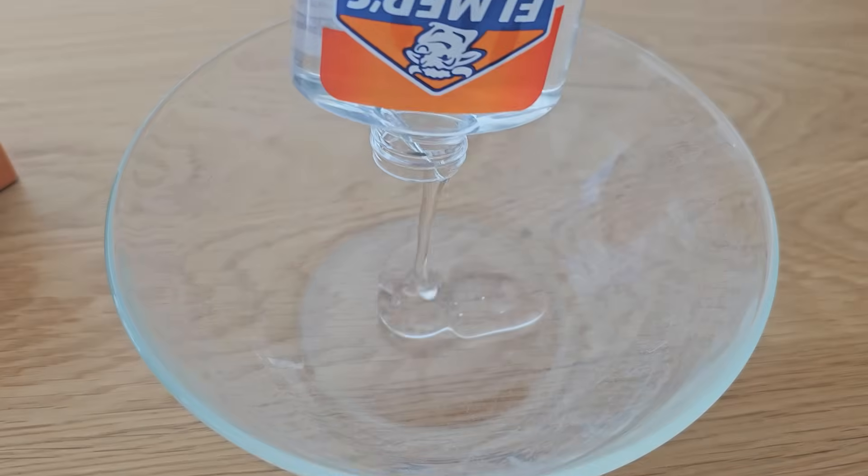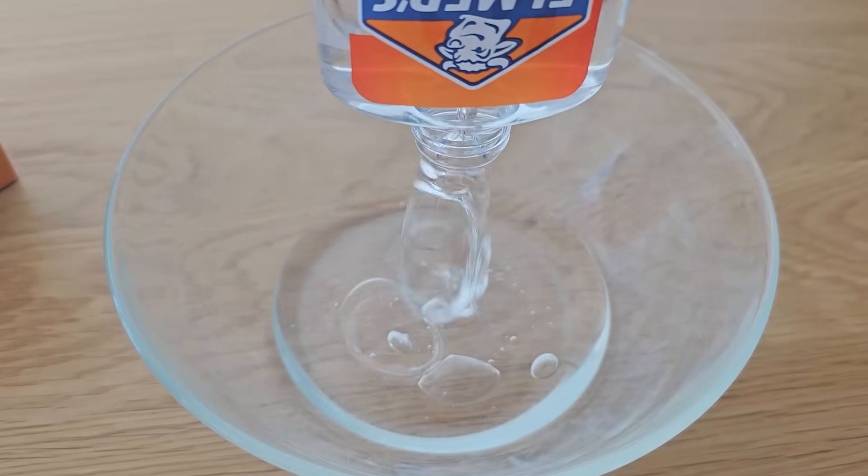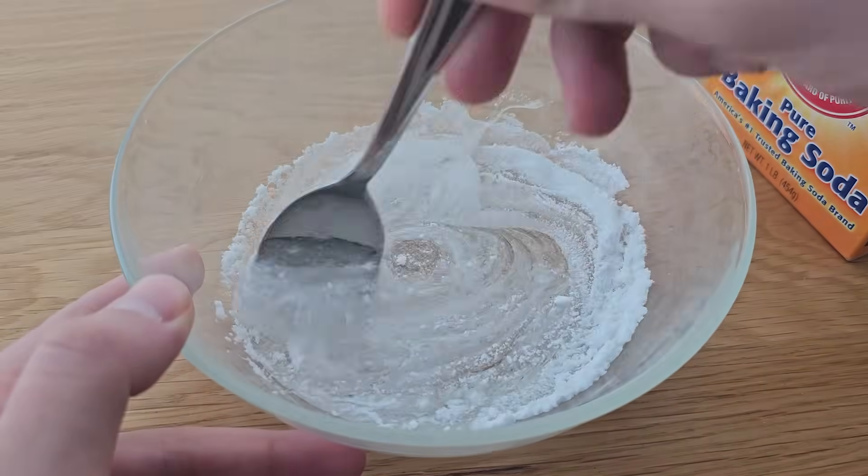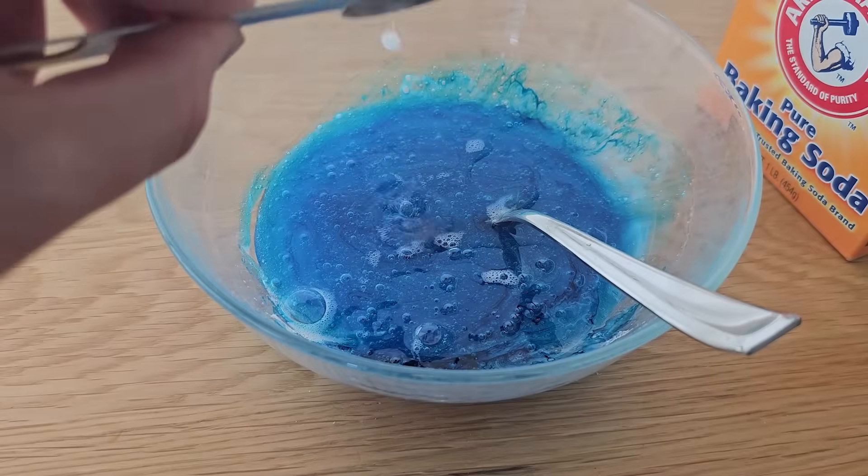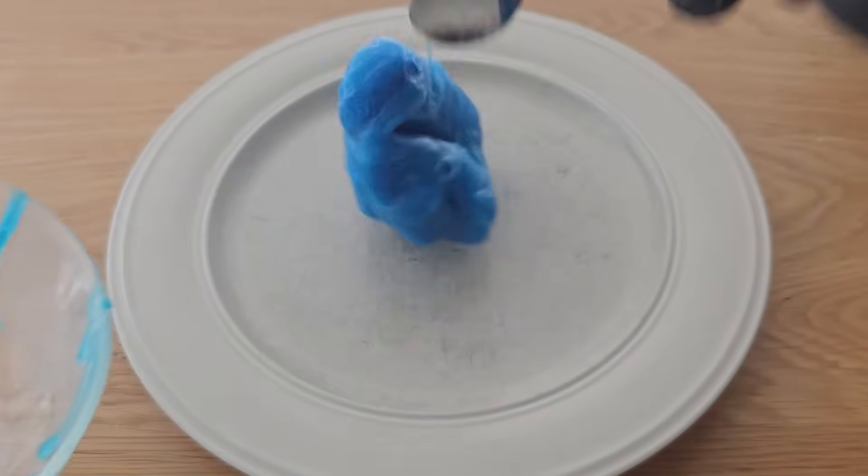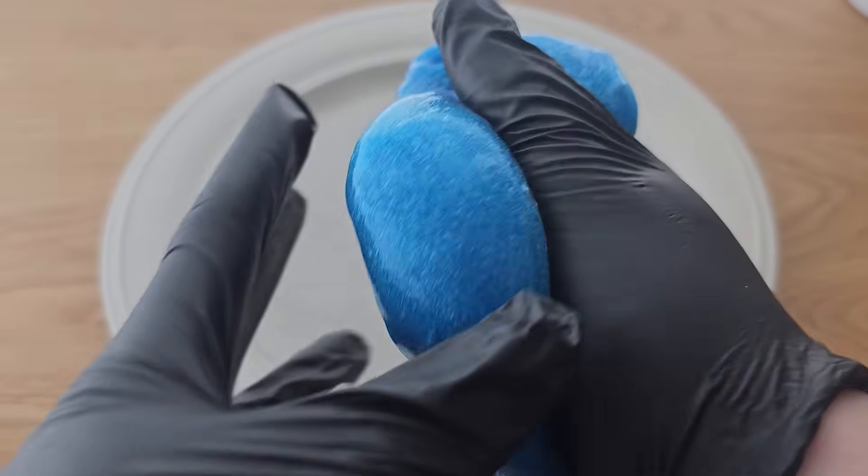Next up take some clear glue and empty it into a bowl. Then add a bit of baking soda and mix it up. Next add some food dye to change the color. Lastly add a bit of contact solution and mix it once again. Now you'll be left with some fun slime that can be squished and stretched like this.